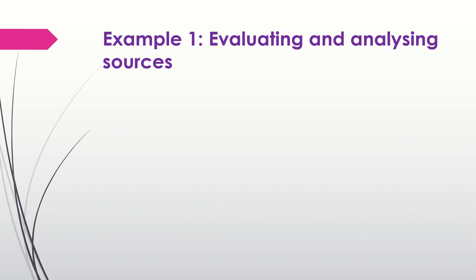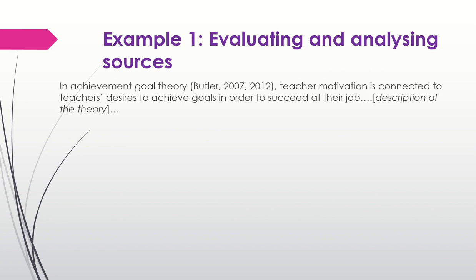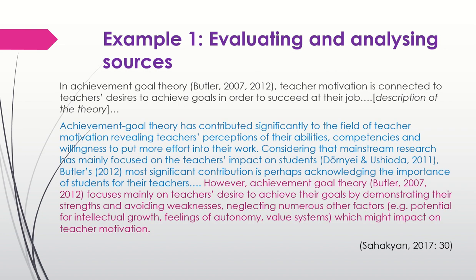Let's have a look at example one. Here, the researcher discusses achievement goals theory. First you need to describe it, and that's what the researcher does. Then the researcher evaluates the theory — she discusses the contribution of the theory, shown in blue, and then the limitations of this theory. Since this is not the theory the researcher used for her study, she points out the limitations to explain why she didn't adopt it. So the sentences in blue and purple demonstrate what the writer thinks about this theory — her attitude towards it.